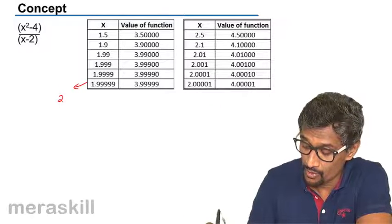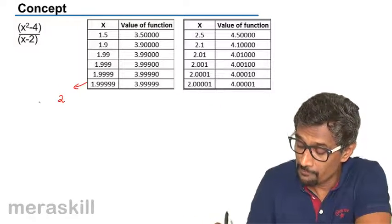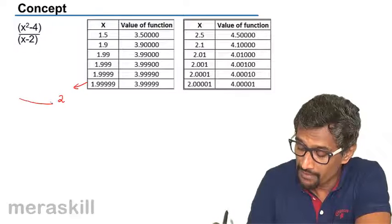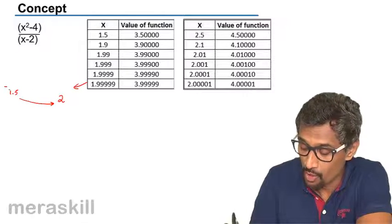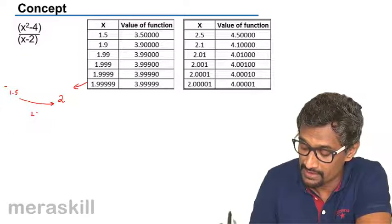you are approaching two from 1.5, from lower values, that is from smaller values. We call this as a left hand limit.